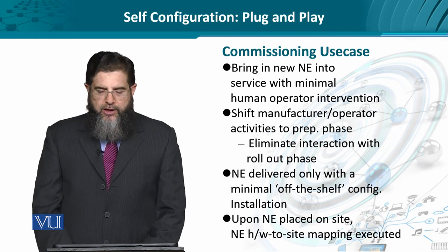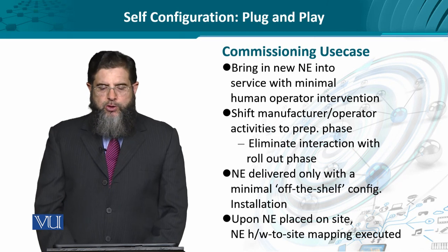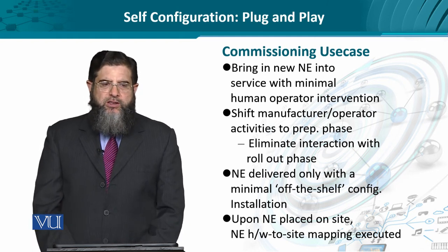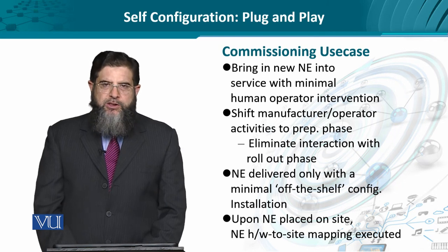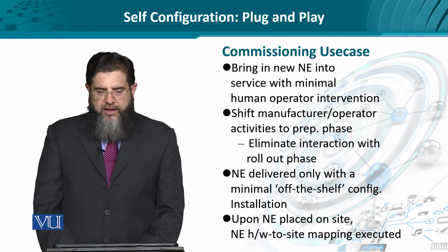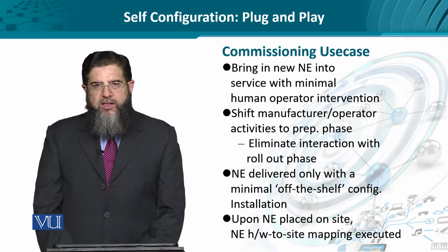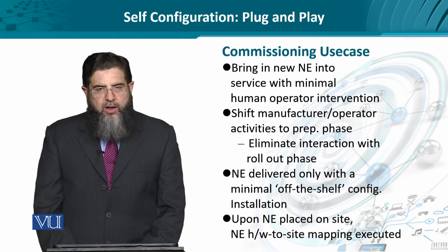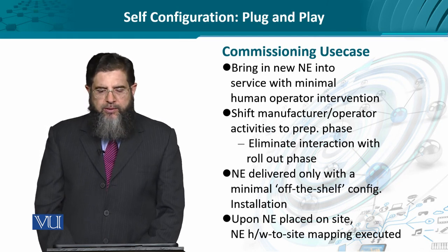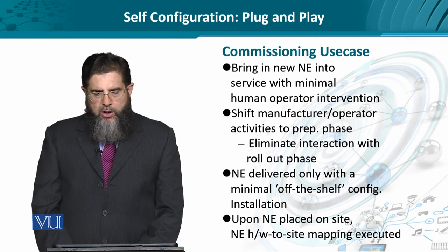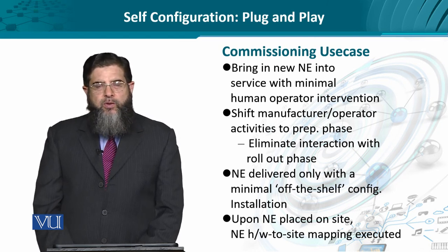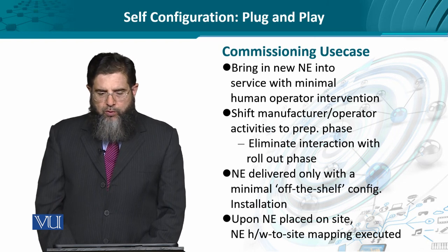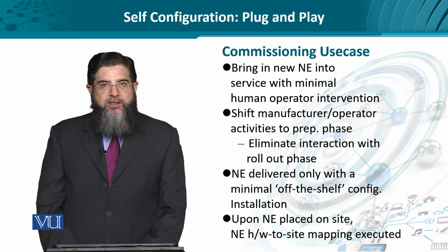Let's look at a scenario where a base station has to be installed in a certain network proximity. In pure 2G jargon, a base station talks to the base station controller, but in 3G, 4G, and beyond, the network elements have been rebranded — though essentially the concept remains the same. If a certain base station has to be deployed, it is a new network element, and it has to be installed and started with minimum human intervention. Self-configuration dictates an interesting approach to this.